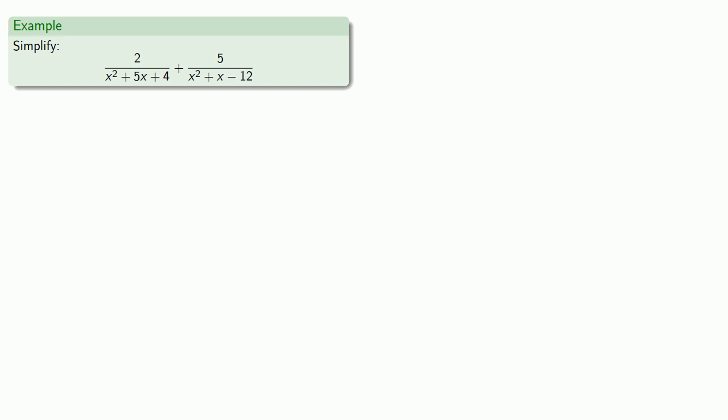So for this first denominator, x squared plus 5x plus 4, we want this to be the product of x plus a times x plus b, so we need to try every pair of numbers a and b where ab is equal to 4 and hope we get the middle term correct.